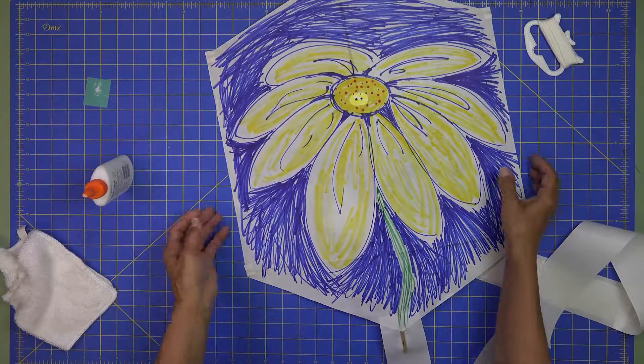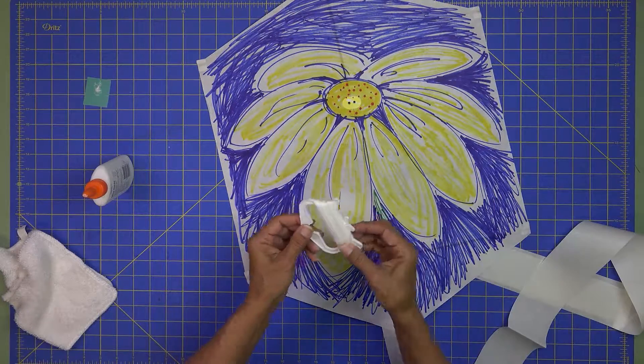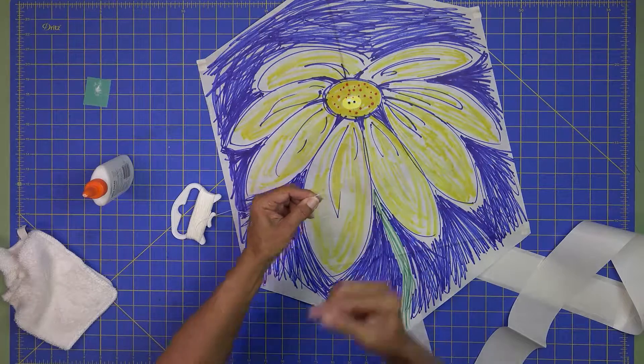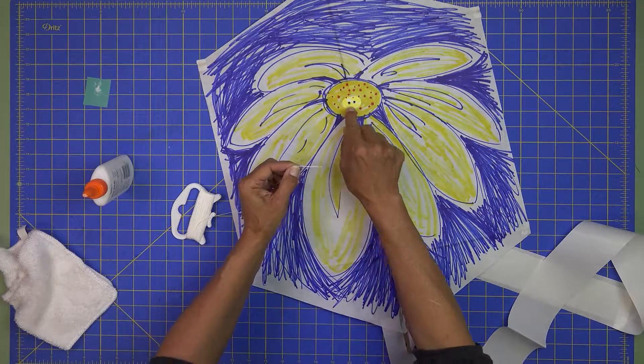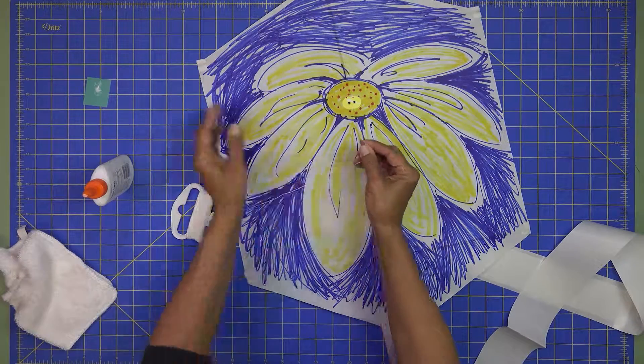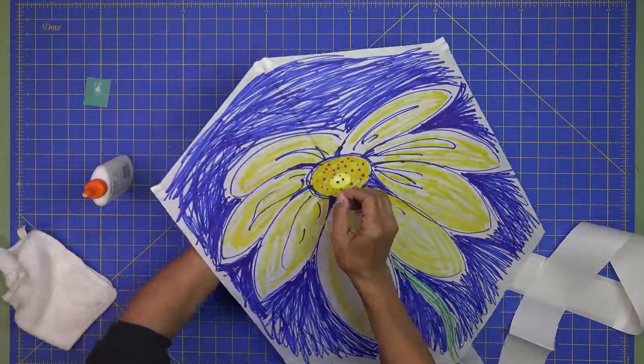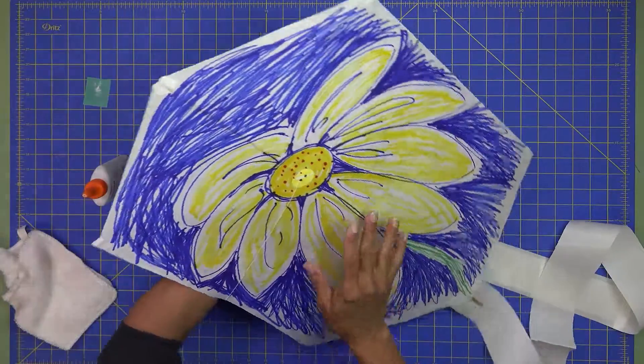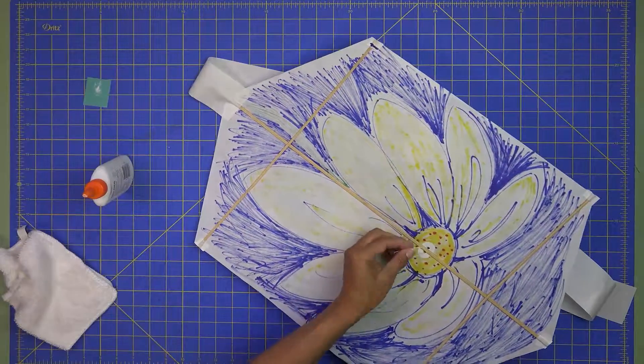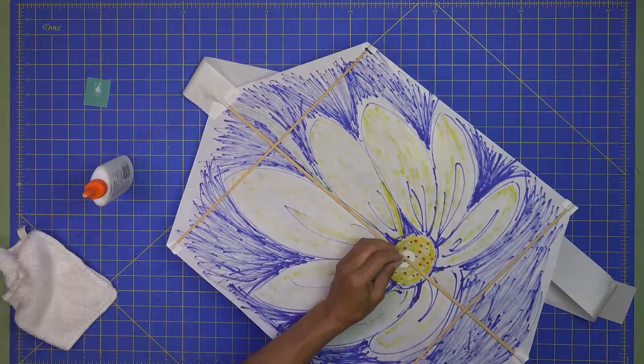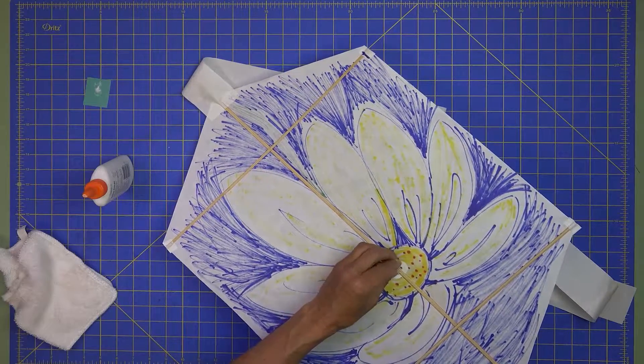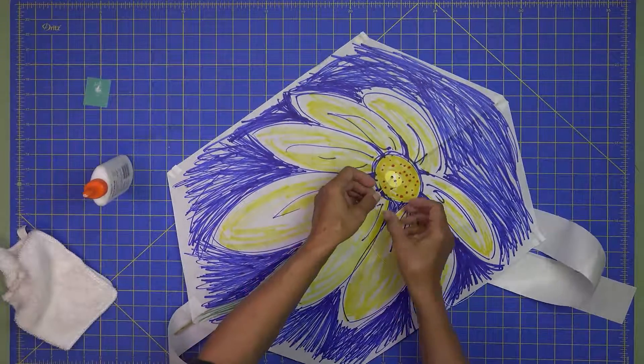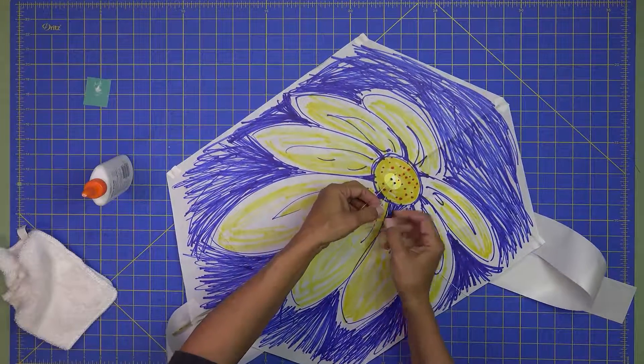We're going to turn the kite back over. And it's time to bridle your kite. This is a very simple bridle. We'll just take the end of the string. And you're going to run your string through one hole, around the stick, and back out the other. So just feed it through there. Comes through and it goes around this bar. And then back out the front. And then we're just going to tie a simple overhand knot.